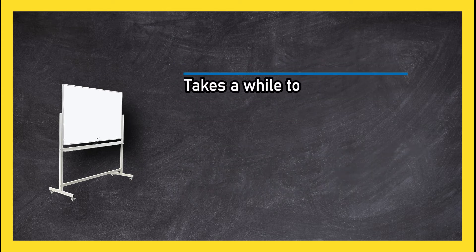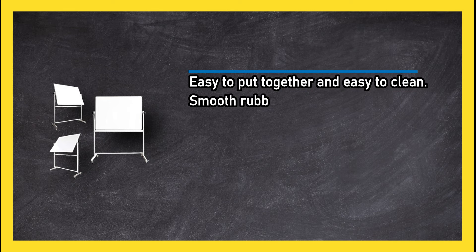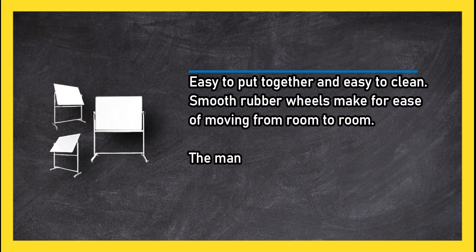Takes a while to assemble. At number 2: Fly Bold 36 by 48 inch mobile magnetic whiteboard. Easy to put together and easy to clean. Smooth rubber wheels make for ease of moving from room to room.